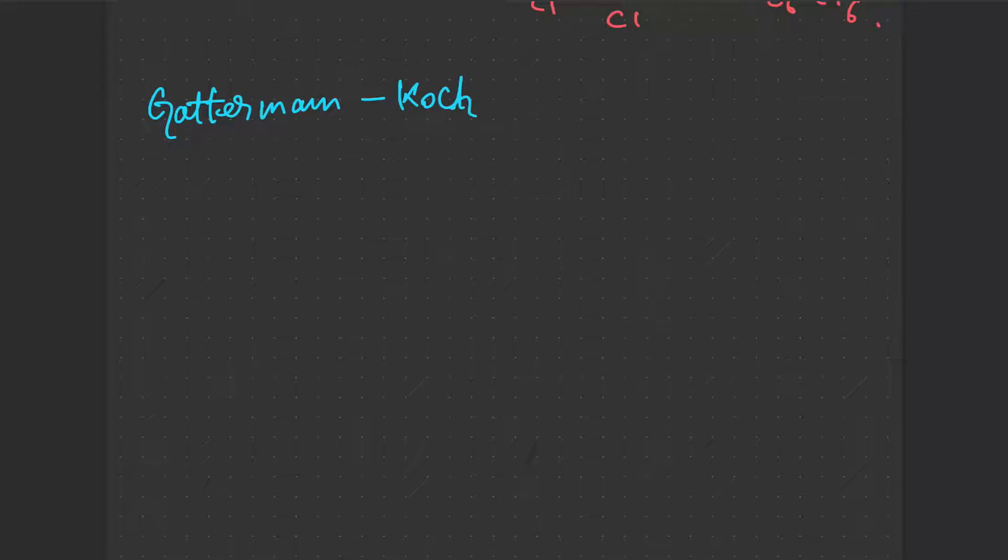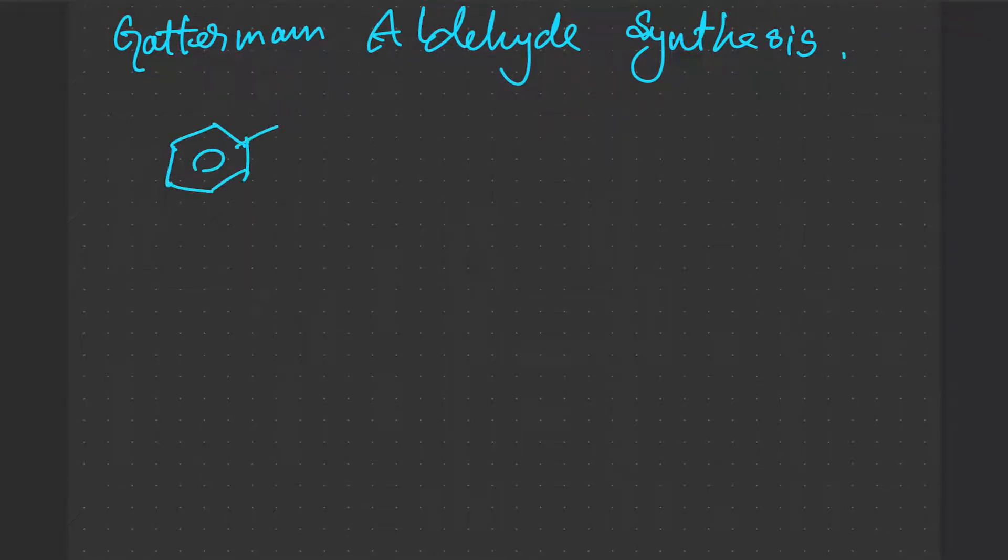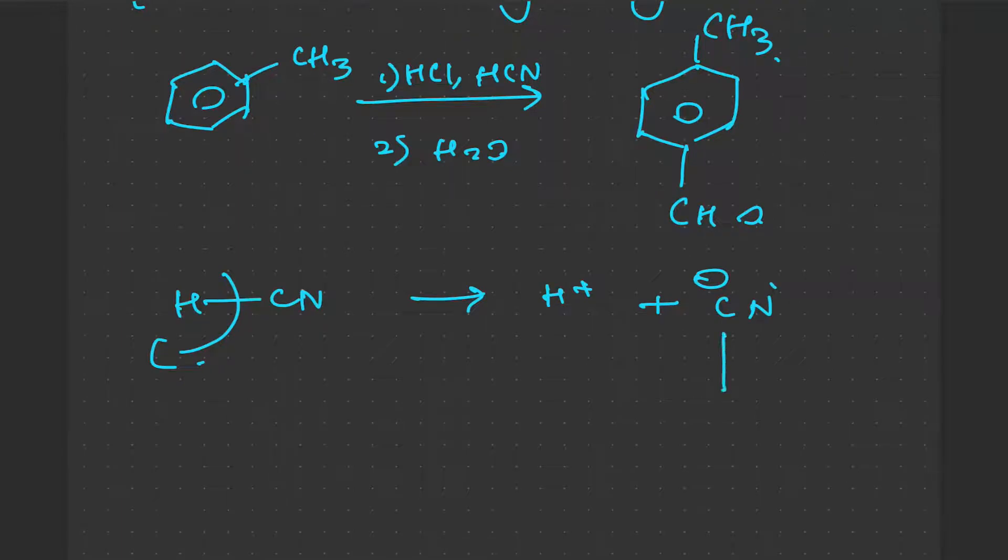Now coming to Gatterman aldehyde synthesis. This one you'll study again as well in ketones and aldehyde structure synthesis, but still I'm giving it beforehand. What happens? Let's see the mechanism. We have HCl like this. The H, as it is being acidic, so we get H+ and Cl-. And let's say on the Cl-, wait, I'm sorry there's a mistake.